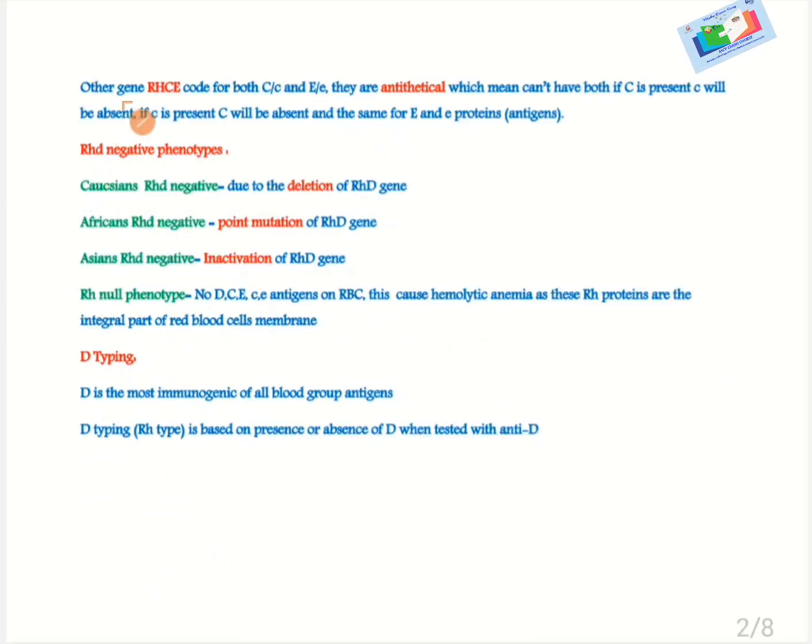Other genes are HCE code for both C and c, and E and e. They are antithetical which means cannot have both. If capital C is present, small c will be absent. If small c is present, capital C will be absent. And the same for capital E and small e proteins.